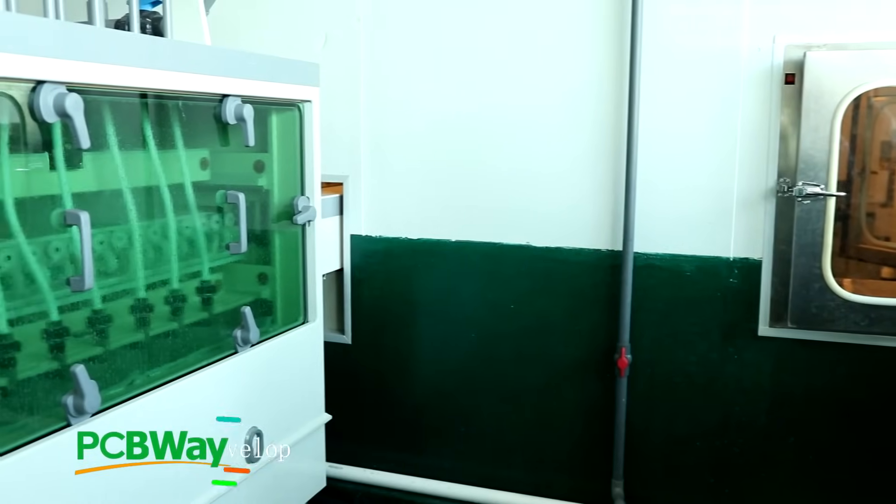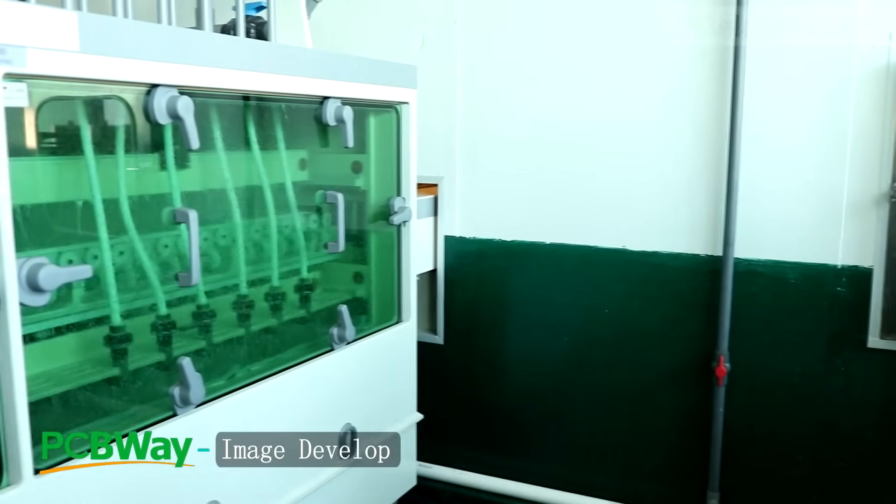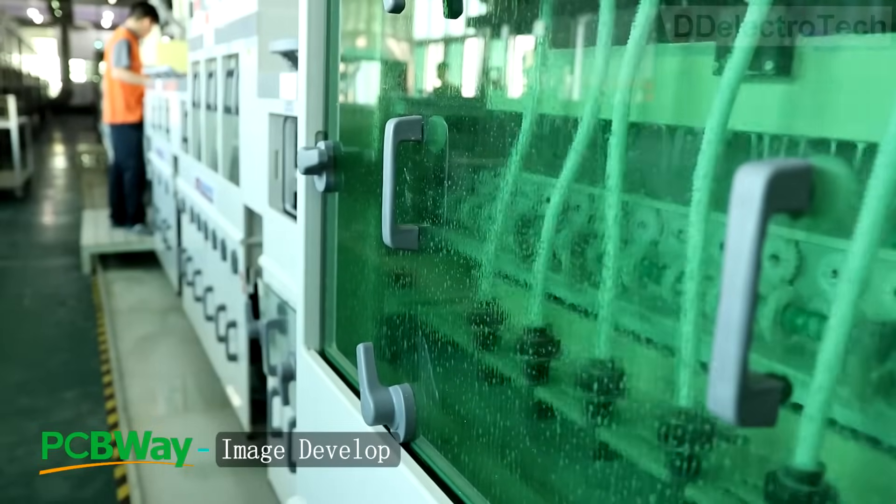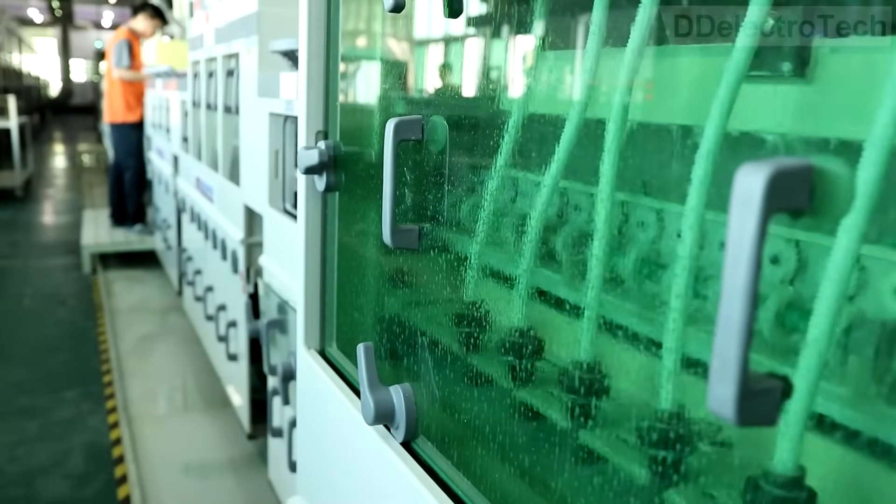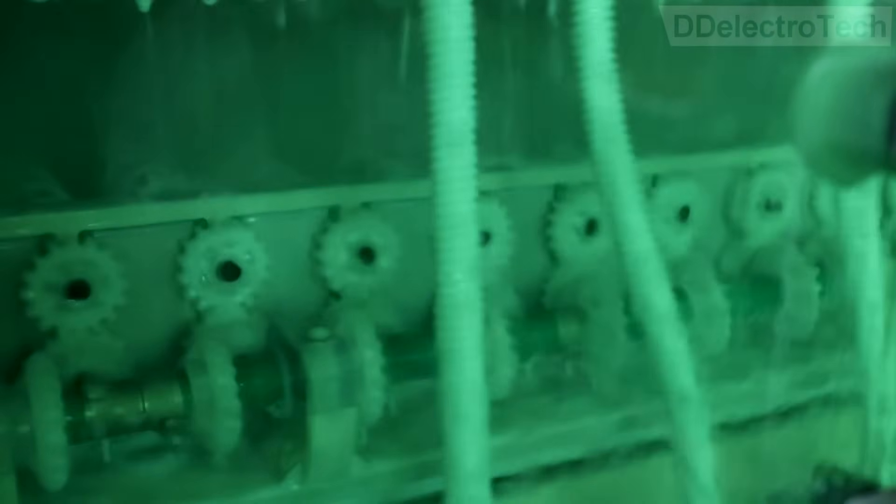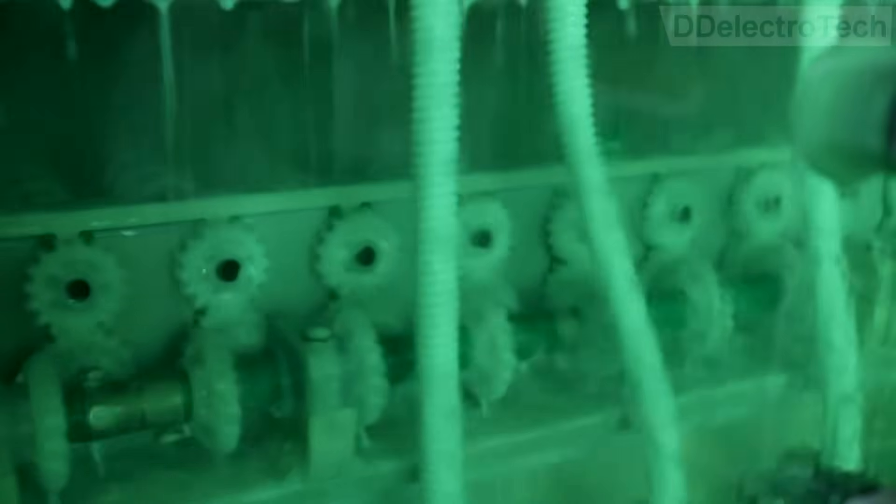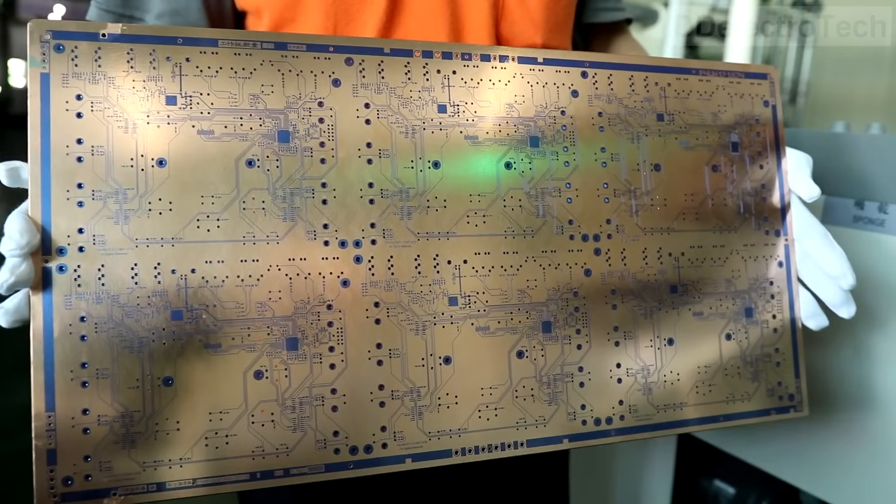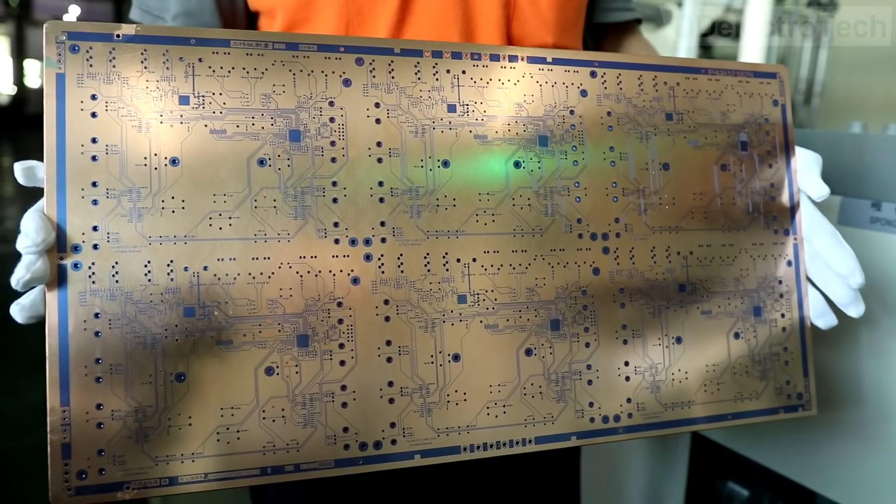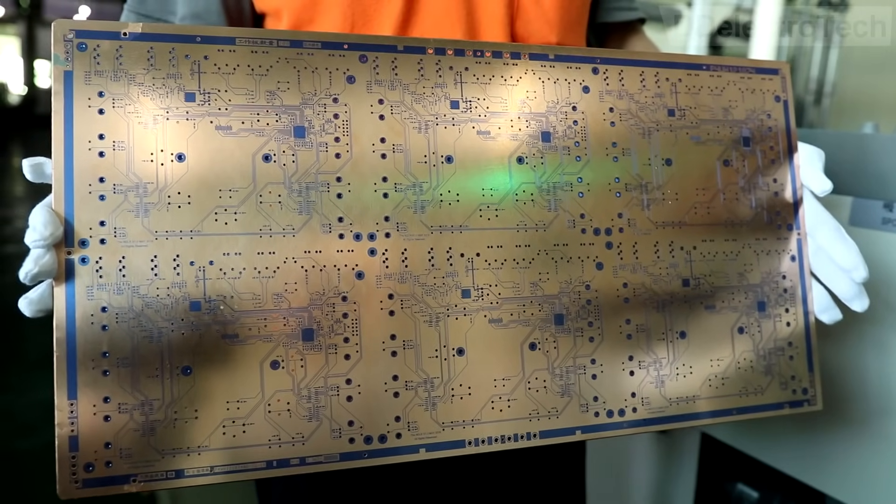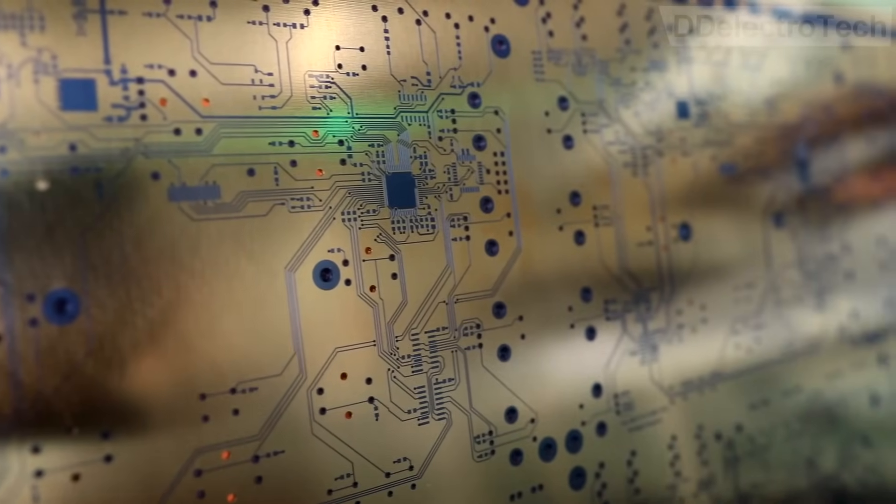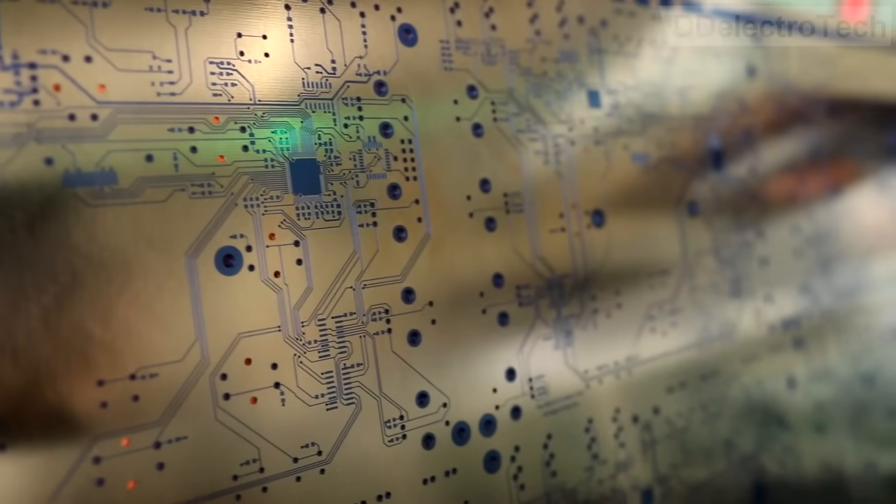Next, the board is processed through a chemical solution, or developer, that removes the unhardened and unwanted resist from areas that were not polymerized by light. After this, you can clearly see only the circuit is printed by blue resist, and this material will resist the chemical at the etching process.